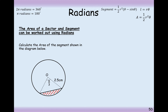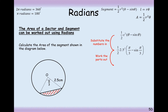Let's work out the area of the shaded region. We can substitute into the formula, or work out the sector and the triangle separately and subtract one from the other. In this case it's going to be 3.125 multiplied by 0.1811..., giving us 0.57 centimetres squared.